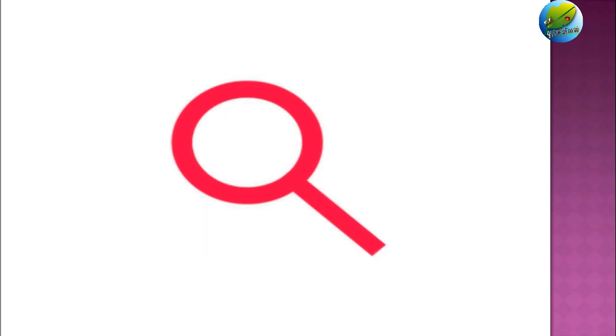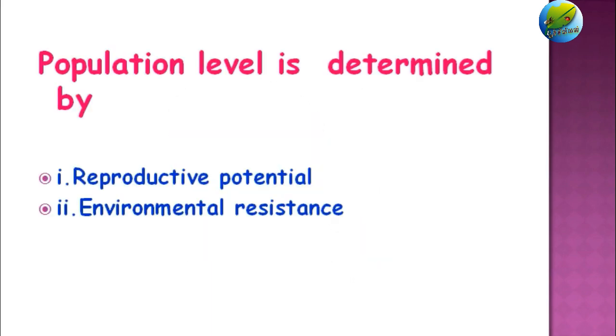The population level of any insect in a given ecosystem depends on two criteria: their reproductive potential and their environmental resistance.